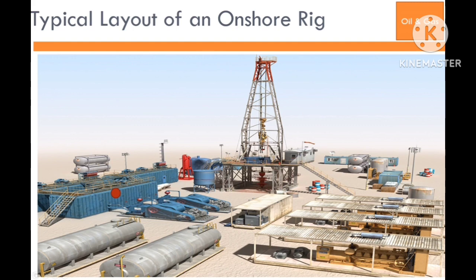The mast in a drilling rig is a tall vertical structure that supports various equipment used during the drilling process. It provides the structural framework for raising and lowering the drill string, which includes the drill pipe, drill bit, and other tools necessary for drilling into the earth's subsurface. The mast is a critical component that enables the drilling rig to perform drilling operations efficiently and safely.